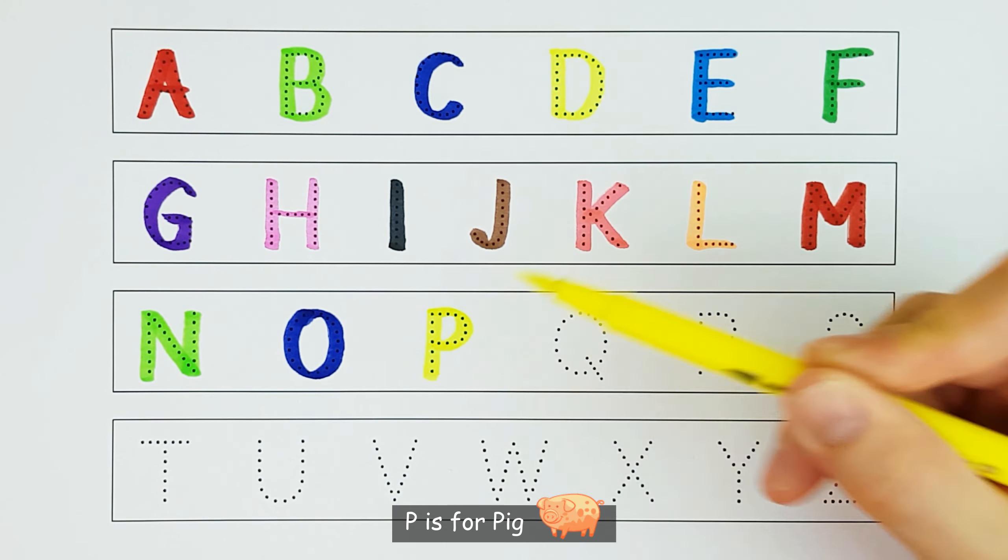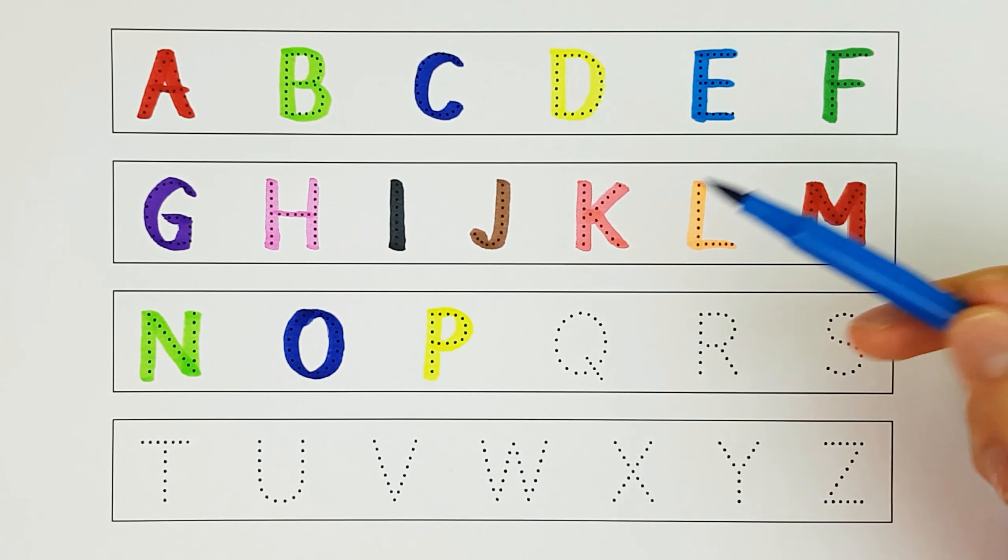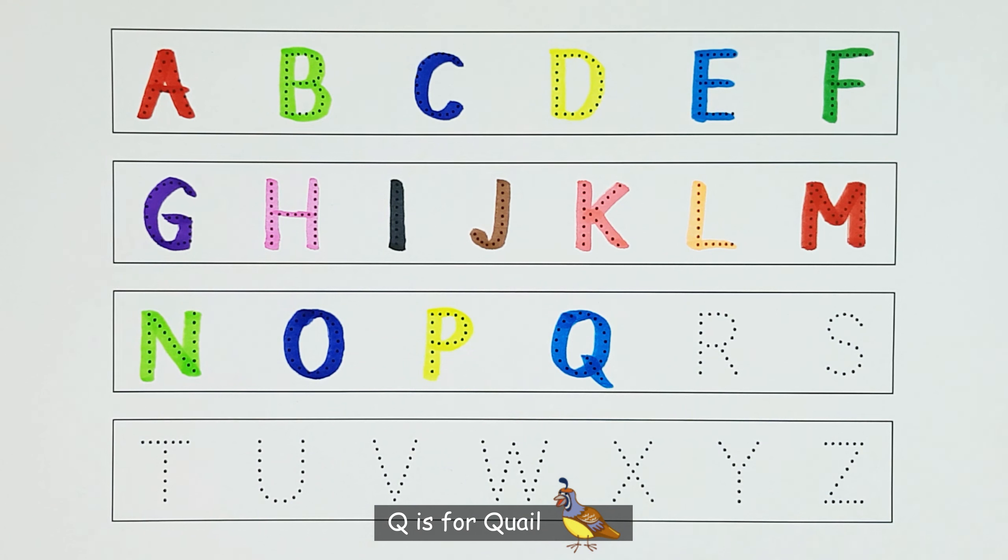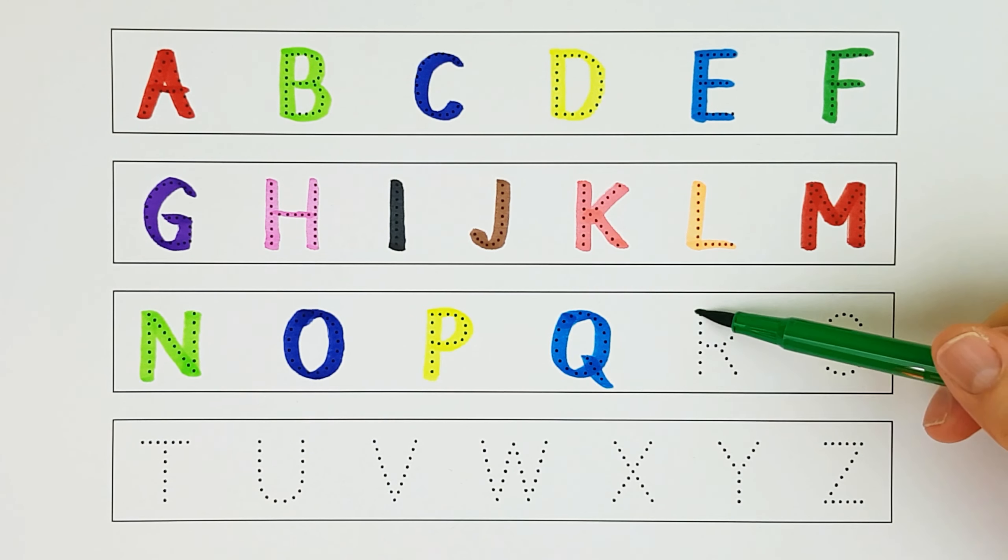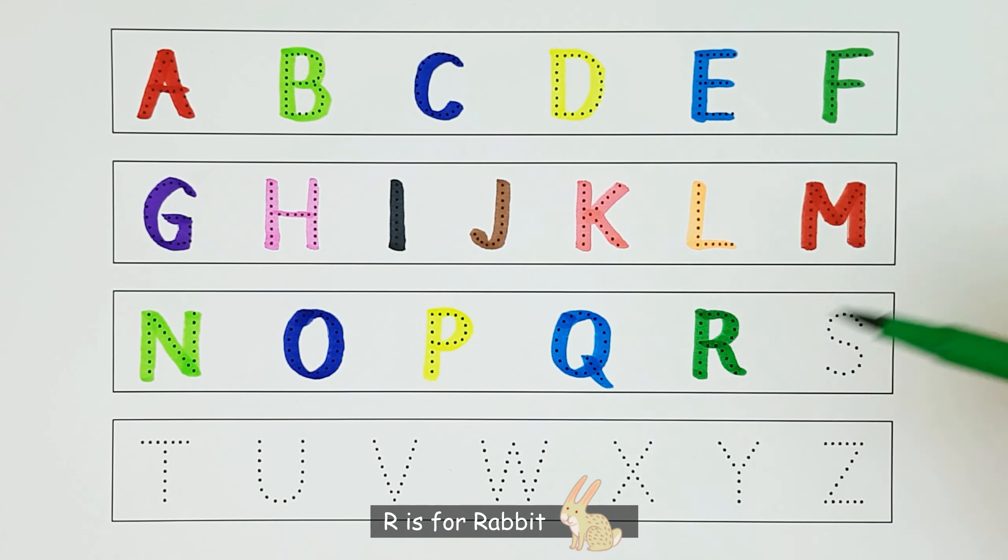P. P is for pig. P. Q. Q is for quail. Q. R. R. R is for rabbit. R.